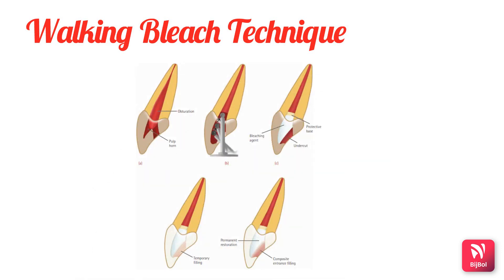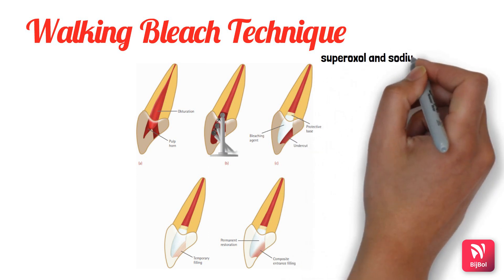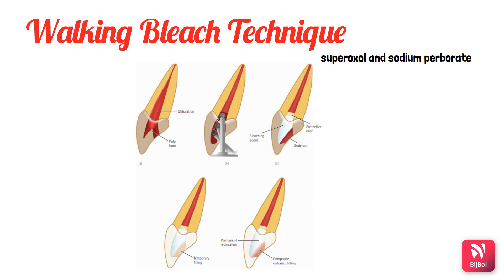The techniques for non-vital bleaching include the walking bleach technique and the in-office thermocatalytic technique. The term walking bleach was proposed by Spasser and modified by Nutting and Poe, describing bleaching action in non-vital teeth that occurs between patient visits — hence it is known as walking bleach. Initially this procedure used a mixture of sodium perborate and 30% hydrogen peroxide (superoxol) as the bleaching agent, but due to its caustic effects, presently sodium perborate is mixed with 3% hydrogen peroxide. After the preliminary procedure, the bleaching action occurs over the next three to five days out of the office, and the bleaching effect is visible after one or two visits.